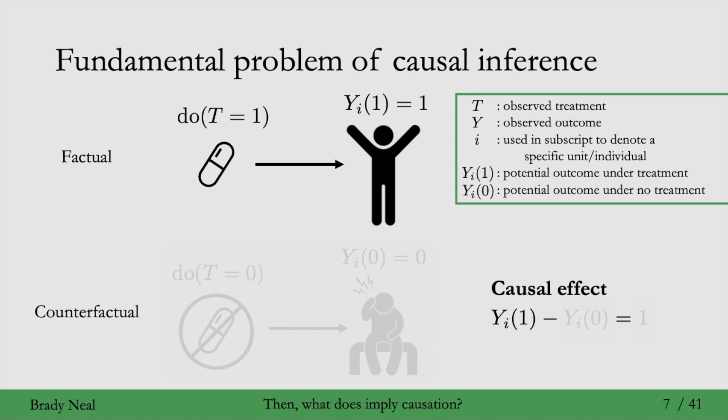Similarly, if I did take the pill, so I did do T equals 0, I would observe my potential outcome under treatment, YI(1) equals 1. But then I wouldn't be able to observe my potential outcome under no treatment for the same reason as before.